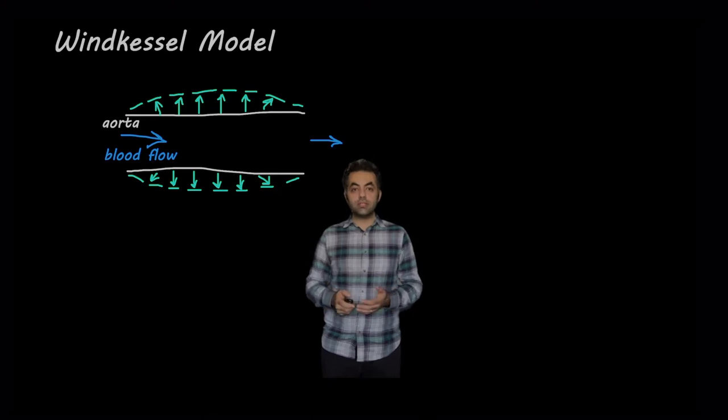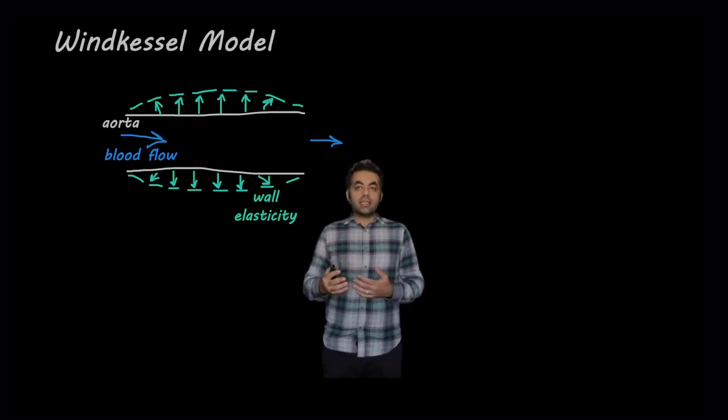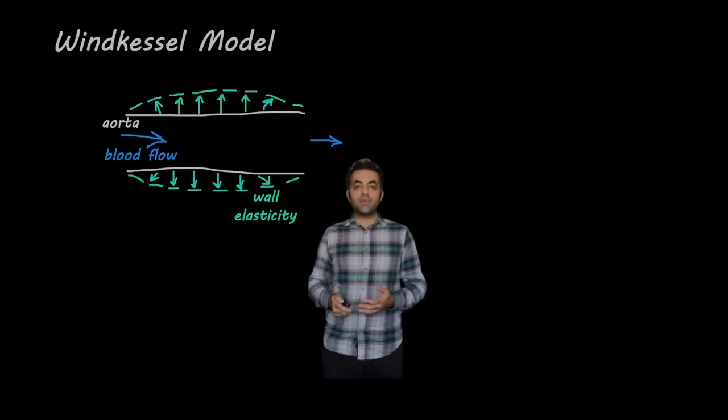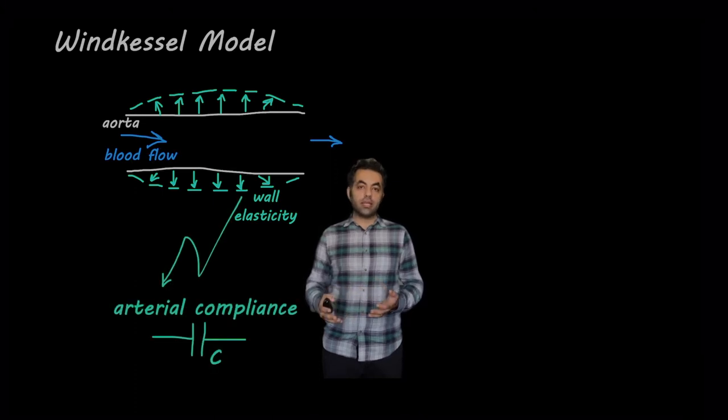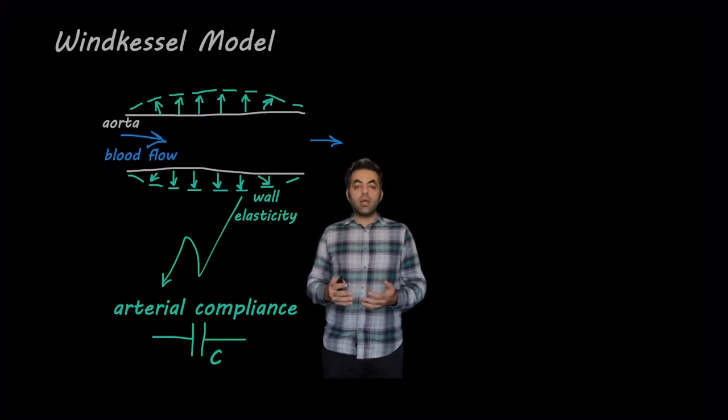And this is due to the elasticity of arterial walls. If we look at an electrical circuit, we can say that this behavior is very similar to what a capacitor does in an electrical circuit. We call this phenomenon arterial compliance.